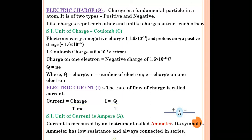Next is Electric Current, symbol capital I. Current means motion and electric means charges, so the rate of flow of charge is called current. The formula is I = Q/T — current equals charge divided by time. The SI unit of current is Ampere (A-M-P-E-R-E), symbol capital A.